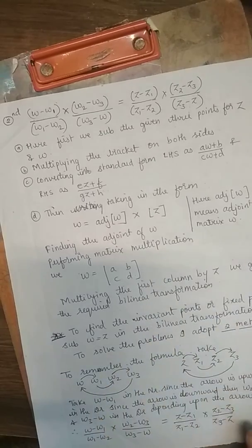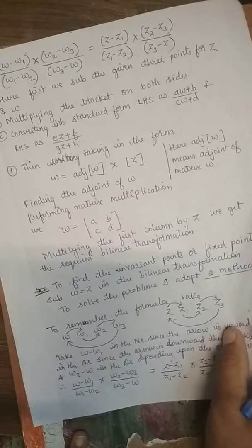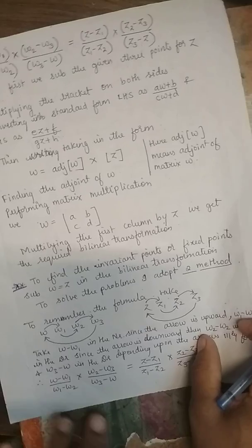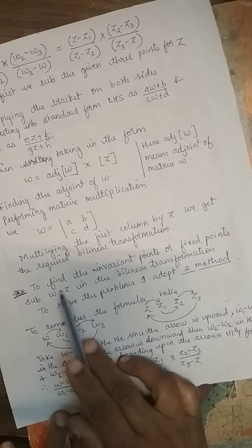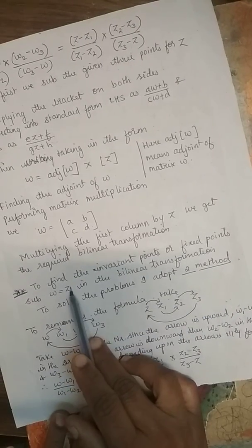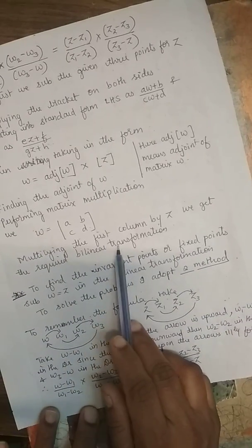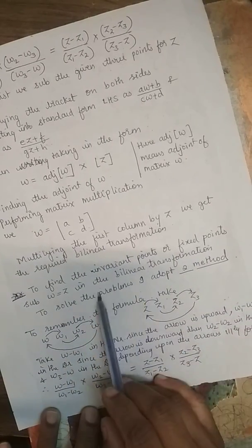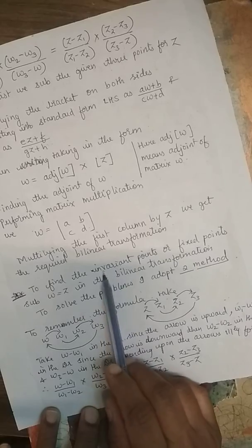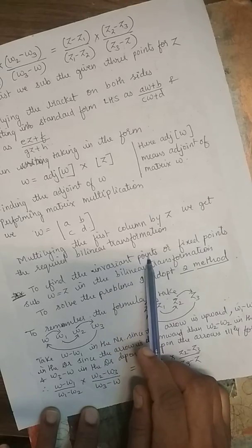After getting the bilinear transformation, to find invariant points we substitute W equals Z into the bilinear transformation and solve.